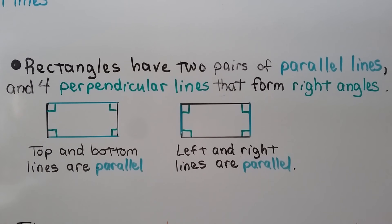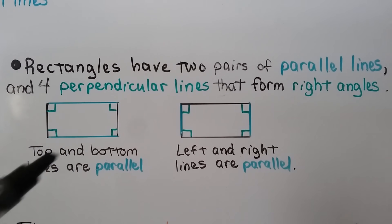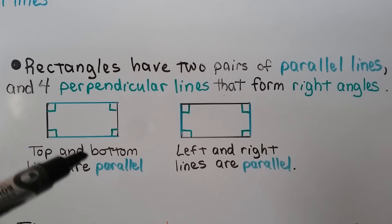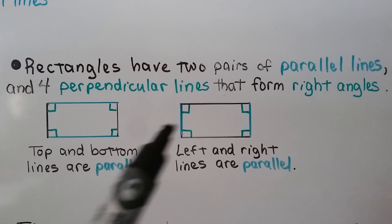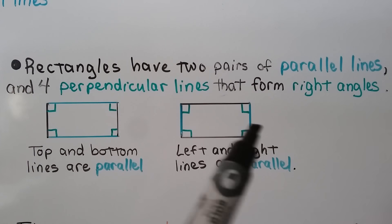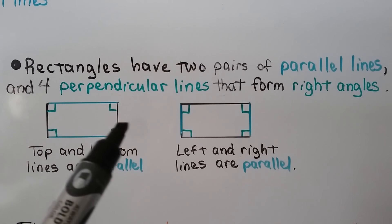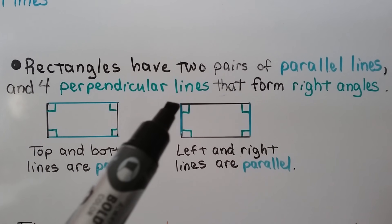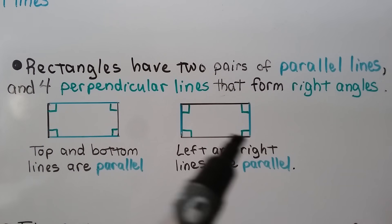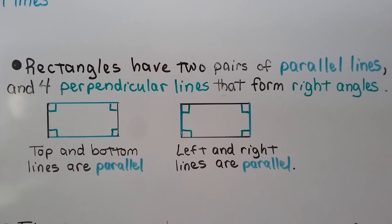Rectangles have two pairs of parallel lines and four perpendicular lines that form right angles. The top and bottom are parallel, the left and right are parallel, and we can see the four right angles inside.